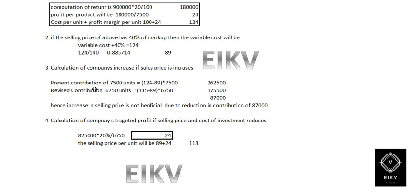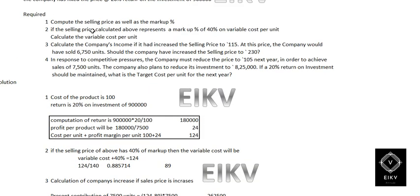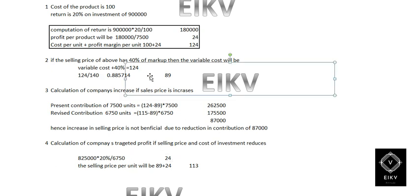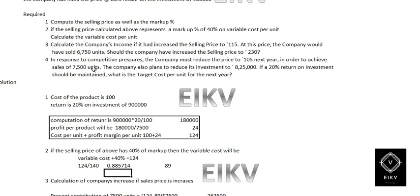Requirement number two: if the selling price calculated above represents a markup of 40 percentage on the variable cost, calculate the variable cost. So variable cost plus 140 percentage equals 124. Therefore, variable cost equals 124 divided by 140 percentage, which gives 0.885, rounding up to 89 rupees.